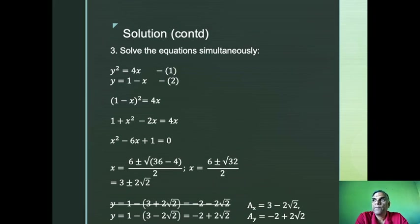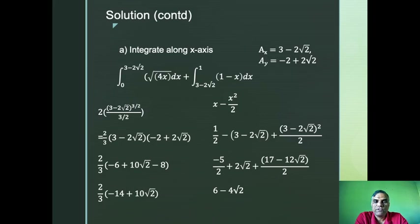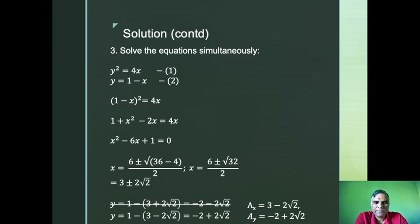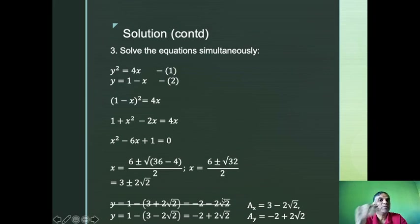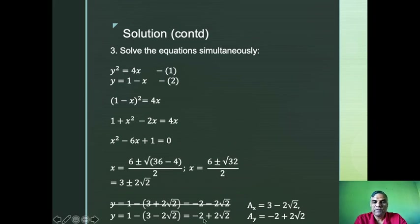For x = 3 + 2√2: y = 1 − (3 + 2√2) = −2 − 2√2, which is negative. Since x and y must both be positive, this solution is rejected. For x = 3 − 2√2: y = 1 − (3 − 2√2) = −2 + 2√2. Since √2 ≈ 1.4, this gives y ≈ 0.8 (positive), and x ≈ 0.2 (positive). So Ax = 3 − 2√2 and Ay = −2 + 2√2.